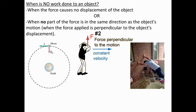There are situations where no work is being done, and it's important to point those out. When work is not done, it's when forces cause no displacement of the object — you can push on it but it's not moving — or when no part of the force is in the same direction as the object's motion; in other words, the force is perpendicular, 90 degrees, to the object's displacement.